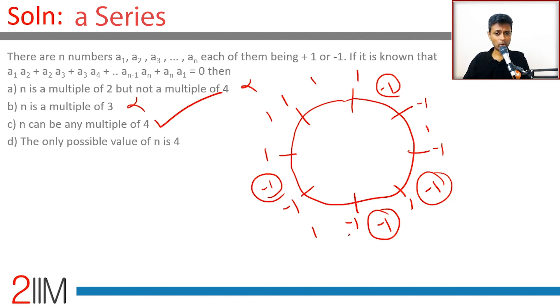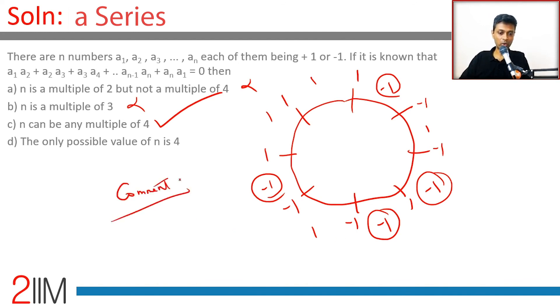So n can be a multiple of 4. The answer is confirmed. As for why it's not possible for an odd multiple of 2 — that's something we haven't fully proven yet. Please figure it out and share why it doesn't work in the comments.